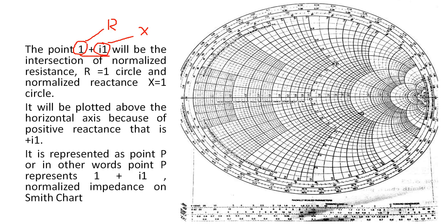These are our R circles, and these arcs are our X circles. We will look for the 1R circle — here you can see that this is our 1R circle. And then we will look for the 1X circle — here you can see that this is our 1X circle.